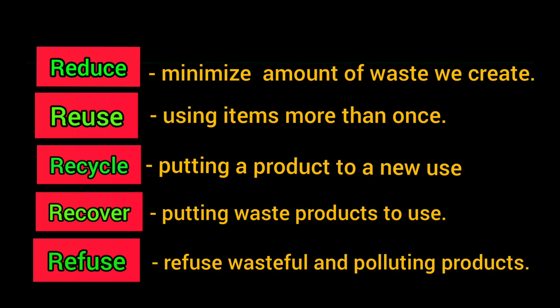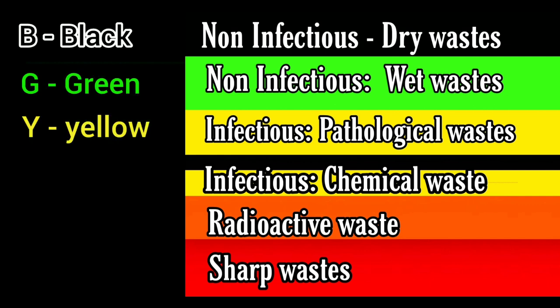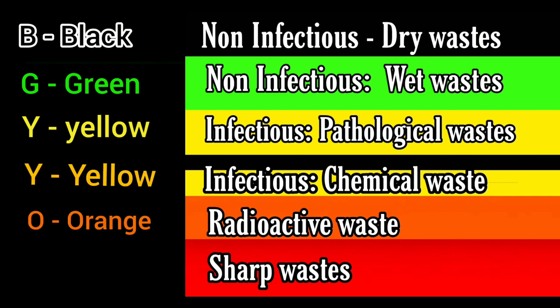Let's talk about solid waste segregation using color-coded trash bins. We have 6 colors of trash bins for our waste products, using the 'BGYYOR' mnemonics: B for black, G for green, Y for yellow, Y for yellow with black band, O for orange, and R for red trash bin.